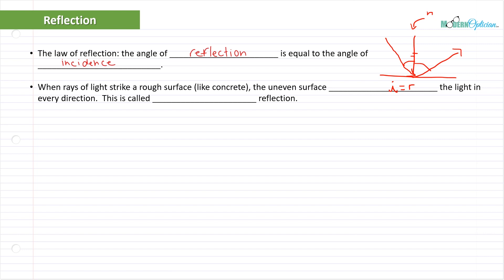When rays of light strike a rough surface like concrete, the uneven surface disperses the light in every direction. This is called diffuse reflection. You've got a really rough surface with all these different facets where light can bounce off. The law of reflection still applies here. However, the surface is so uneven that it's treating light differently on every single surface it hits. Light scatters all over the place, and this is actually the way most objects are illuminated in our environment.